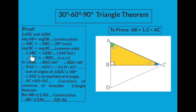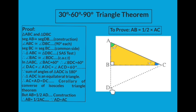Since the two triangles are congruent, their corresponding angles are also congruent — meaning angle A and angle D are congruent. So angle BAC is congruent with angle BDC — reason: corresponding angles of congruent triangles. Since angle BAC is 60 degrees, therefore angle BDC is also 60 degrees.